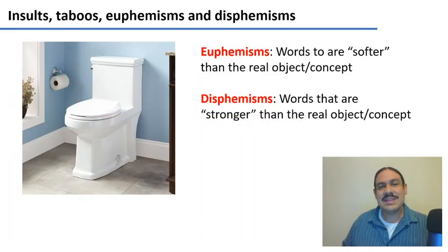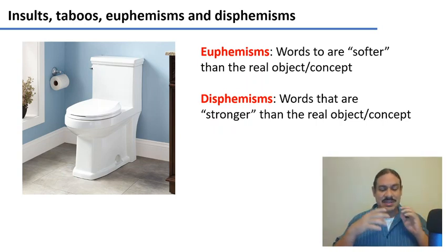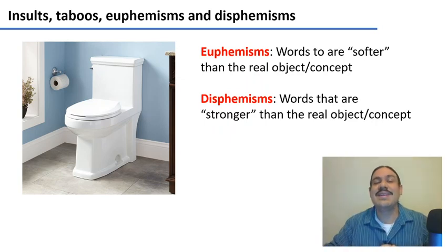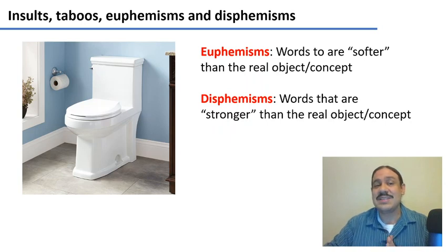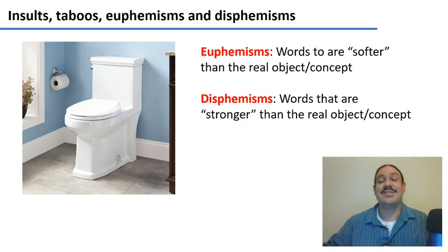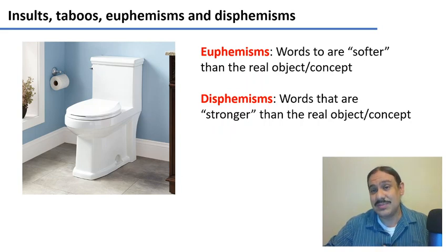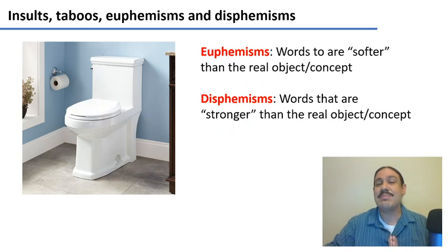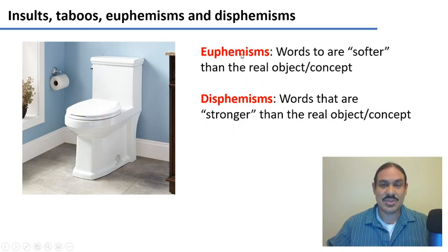Languages can have different words because of their societies, their environment, or just sheer luck as with splitting colors. Another way society can influence language is through what things it considers taboo, inventing many words to circumvent those taboos. For example, what do you call a toilet? If you were with your grandmother, you might call it a bathroom or a water closet. All of these are euphemisms — words that are softer or more polite than the direct term.